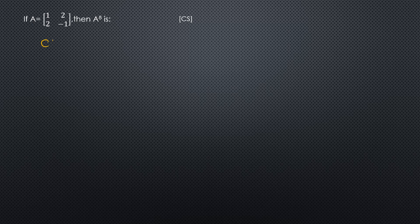If A equals the matrix [1, 2; 2, -1], find A raised to 8. We will write the characteristic equation: lambda squared minus trace of A times lambda plus determinant of A equals 0.